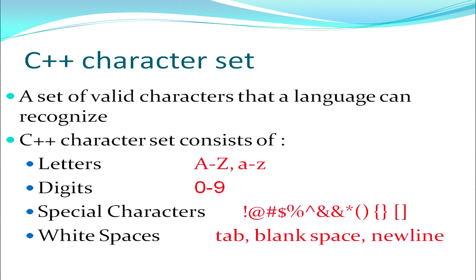Other than special characters, we have white spaces. White spaces are those characters which cannot be seen on the monitor. For example, when you press the space bar you can see the cursor moving but nothing appears on the screen. Similarly, when you press the tab key the cursor moves by 8 spaces but nothing is seen on the screen. So tabs, blank spaces, and new lines are all white space characters.